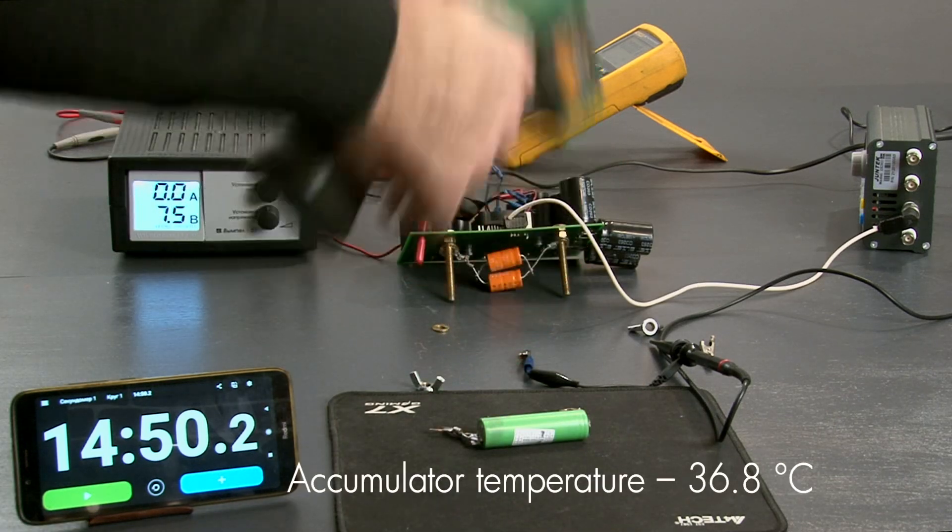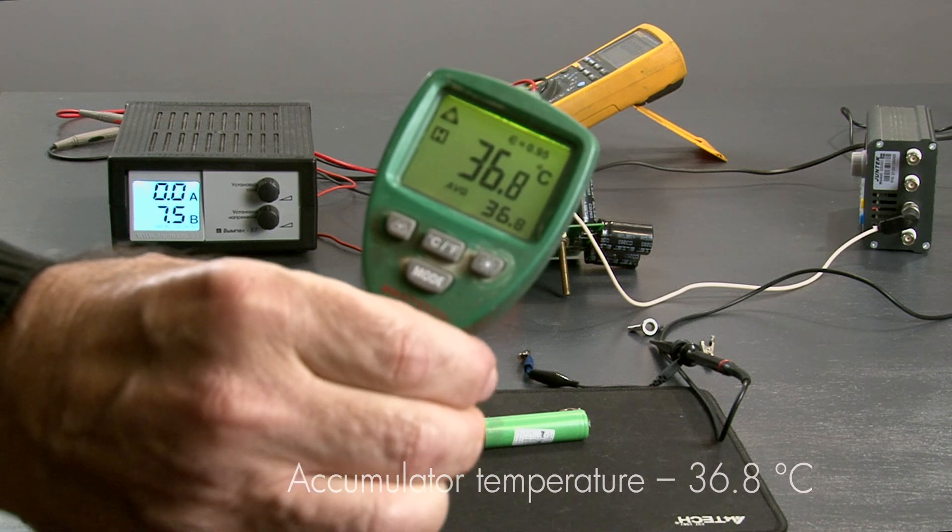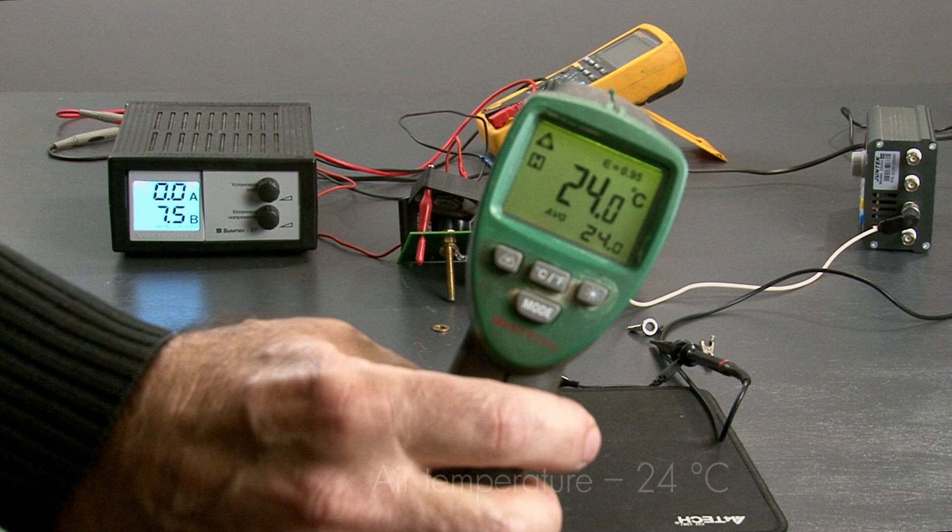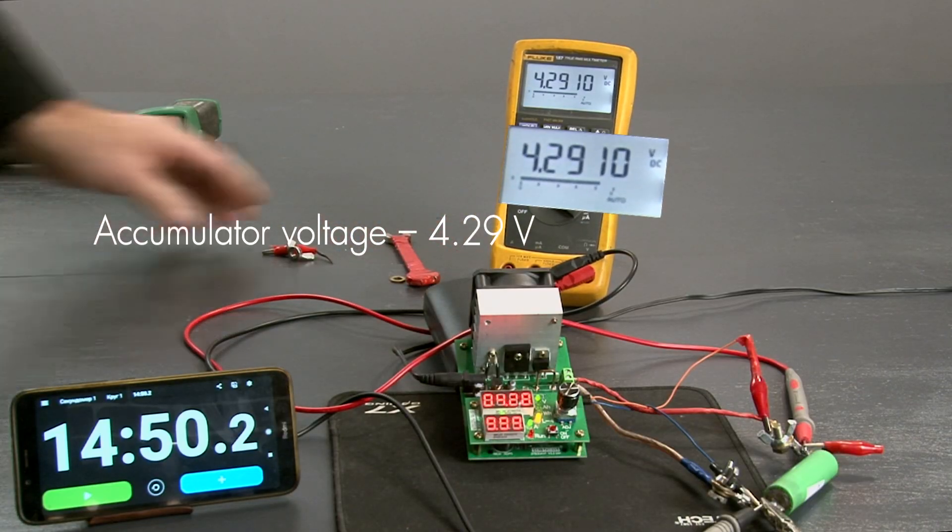Accumulator temperature 36.8 Celsius. Air temperature 24 Celsius. Accumulator voltage 4.29.